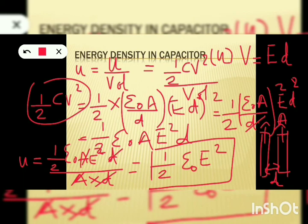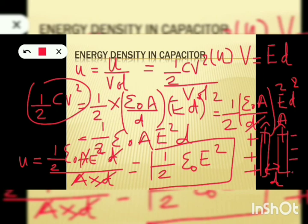Now, if you connect the plates of a parallel plate capacitor together by a copper wire, what happens? In a parallel plate capacitor, one plate is positively charged and the other is negatively charged. So if you connect these two plates together, sparking will occur because the positive and negative plates are connected by means of a copper wire. So this must not happen.